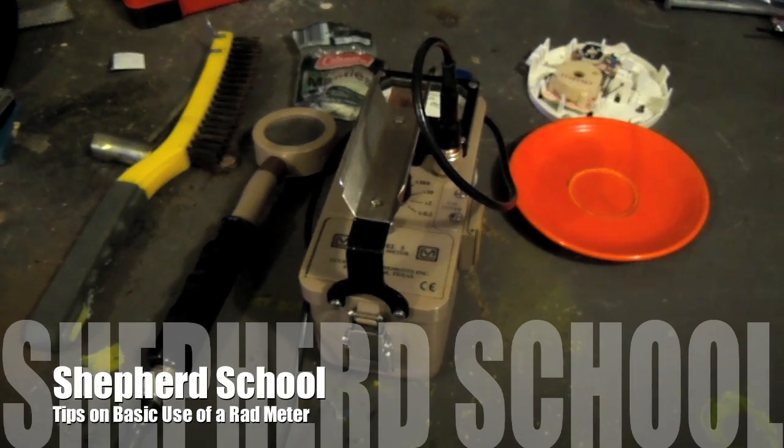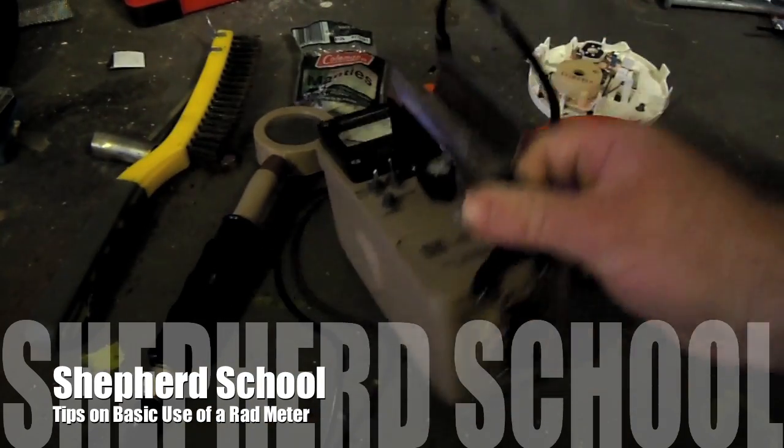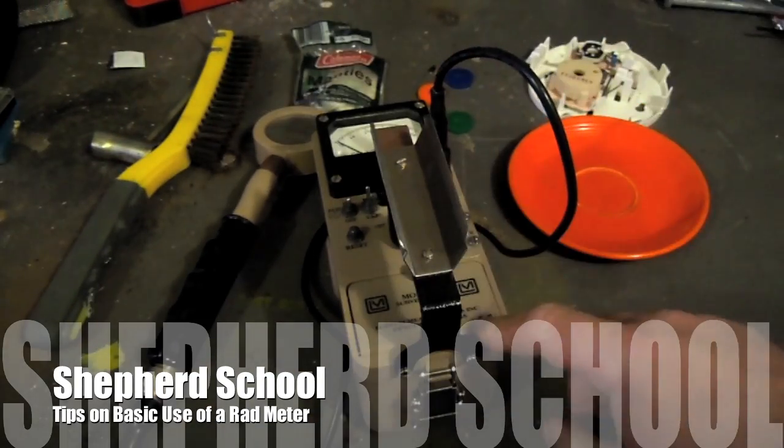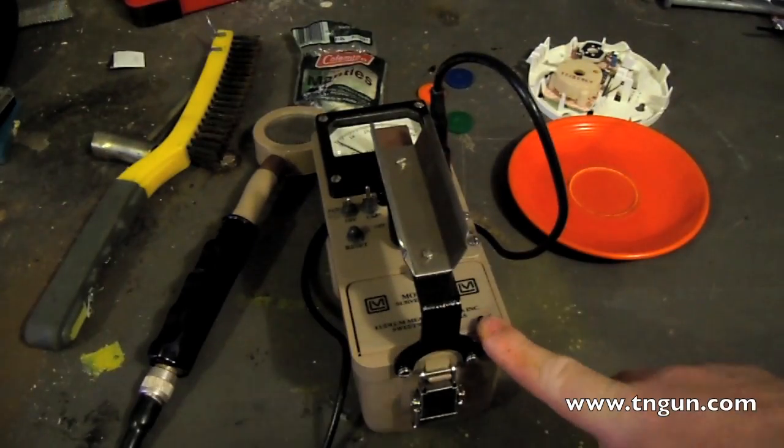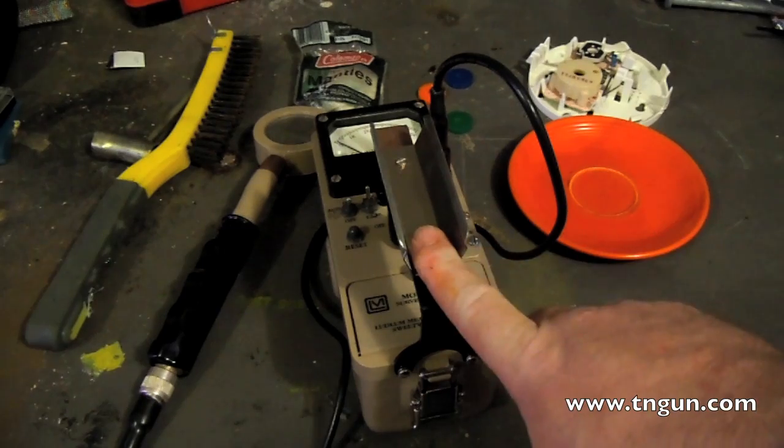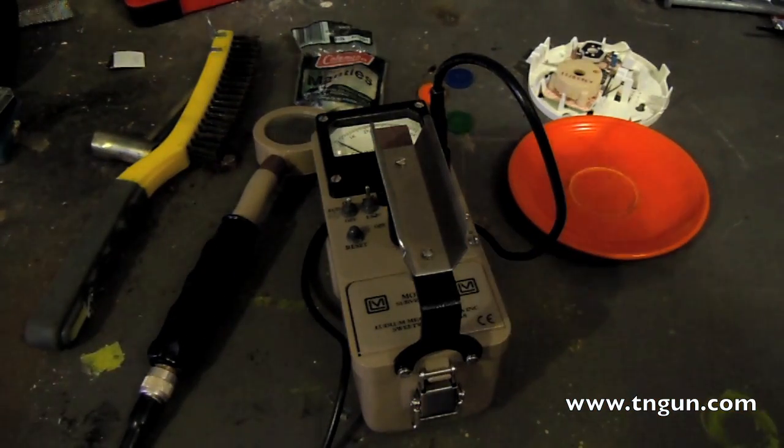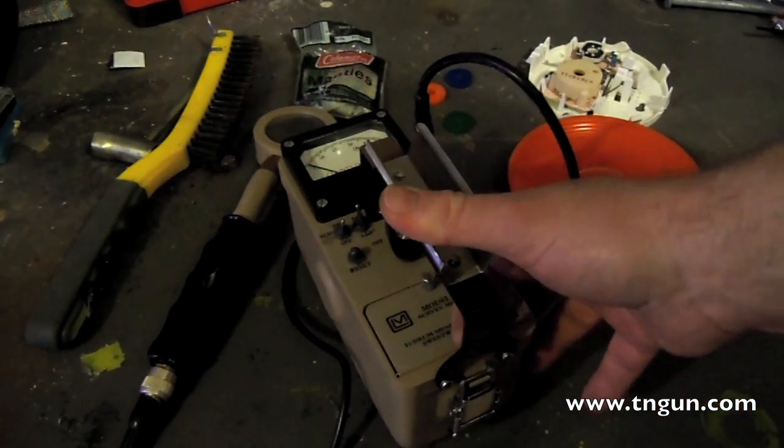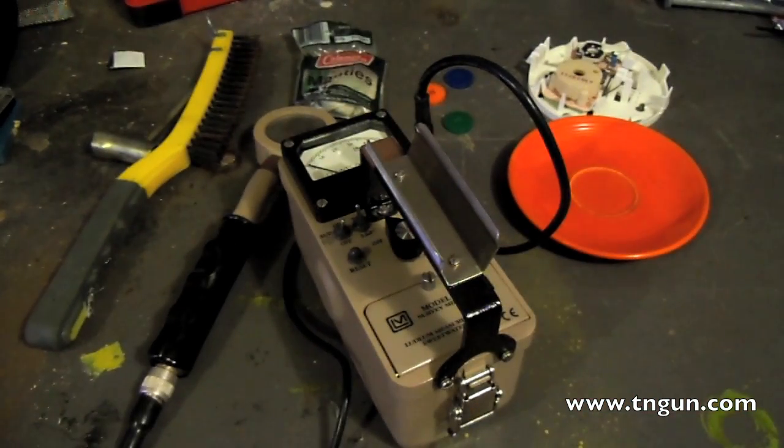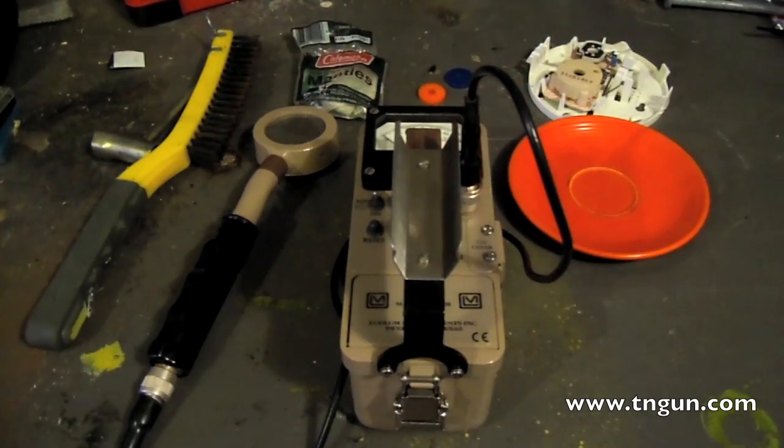Hey, this is Day with the Shepherd School. What we have here is a Ludlum radiation detector, Model 3. Ludlum is kind of like Chevy to radiation detection meters. It's pretty standard within the first responder community for looking at radiation out on a scene.